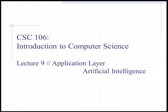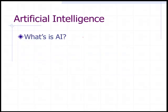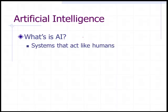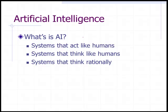Lecture number nine: the application layer. We're going to be discussing artificial intelligence. What is AI? There are four key categories: systems that act like humans, systems that think like humans, systems that think rationally, and systems that act rationally.